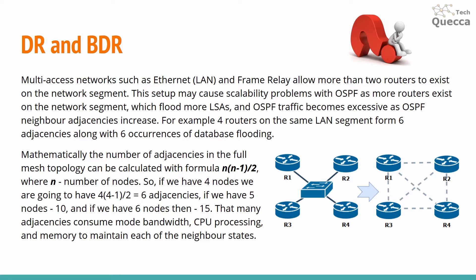For example, if we have four routers in the same LAN segment, they form six adjacencies along with six occurrences of database flooding. Mathematically, the number of adjacencies in a full mesh topology can be calculated with the formula n × (n − 1) / 2, where n is the number of nodes. So with four nodes we get six adjacencies.